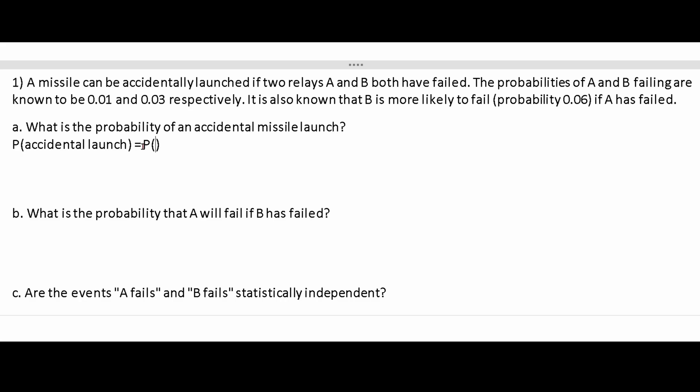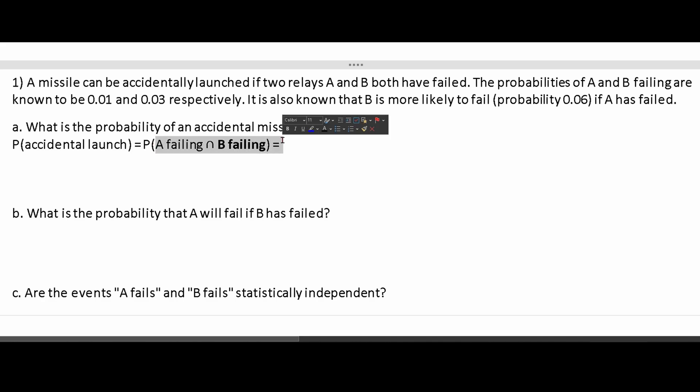When we draw a Venn diagram for this, to have both means they would have an intersection. So we would have A intersecting with B failing. From here, we can look at the notes in the description. This is a formula we can use. A failing intersecting with B failing equals multiplication.